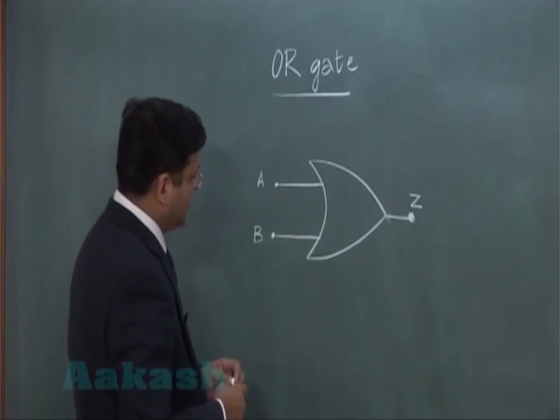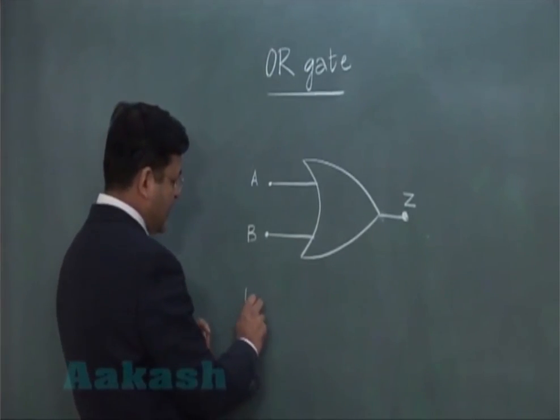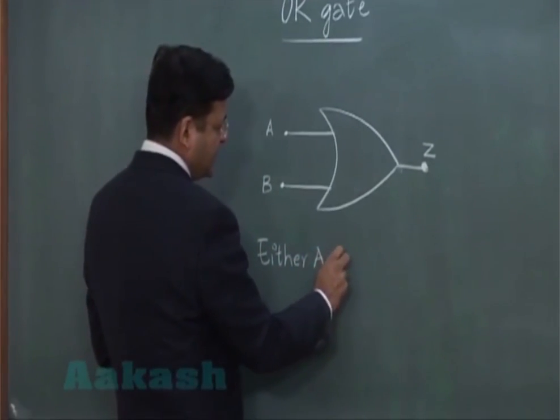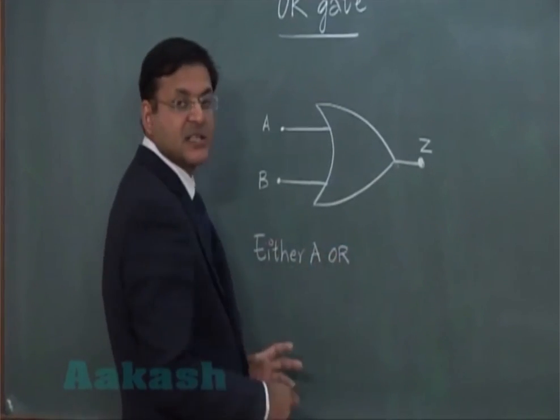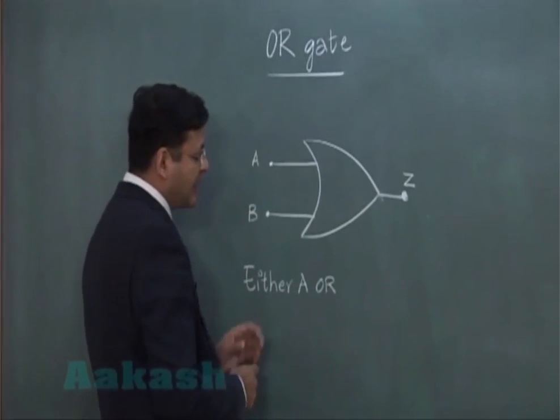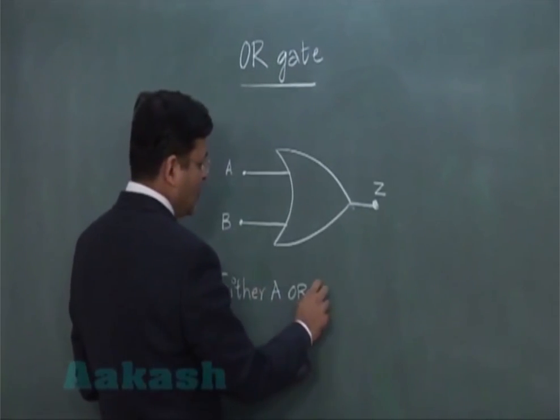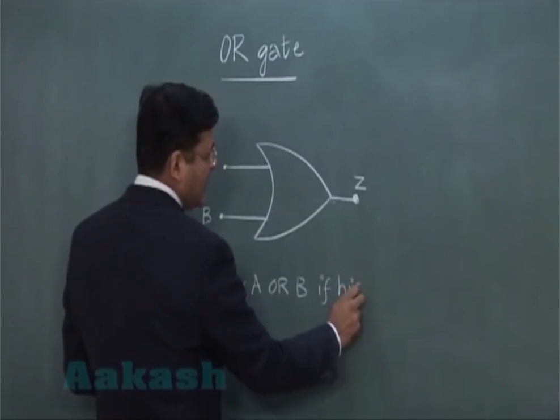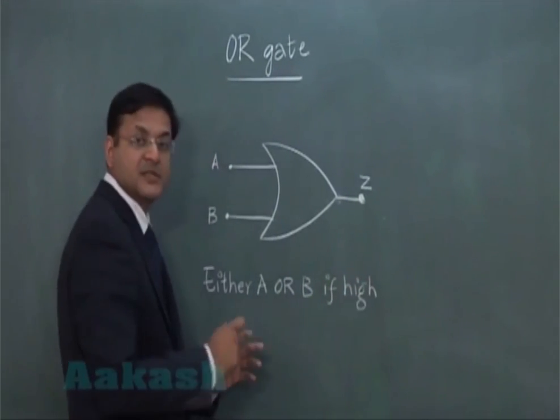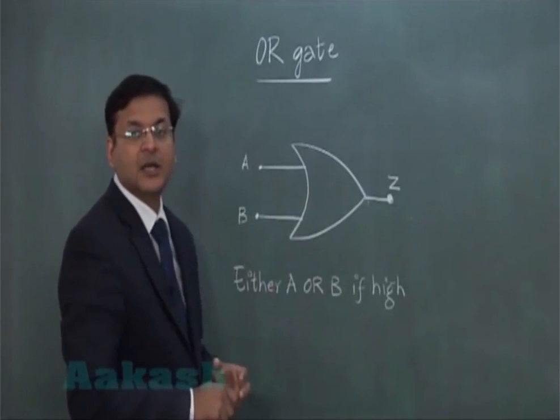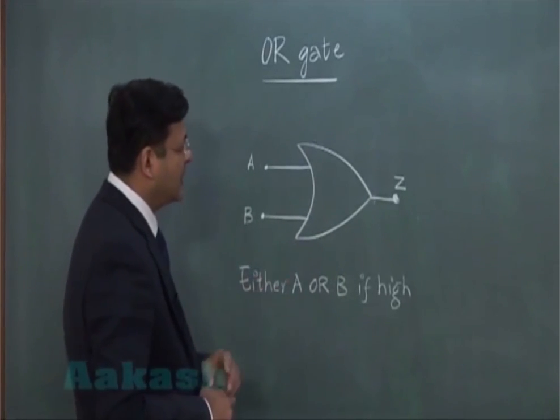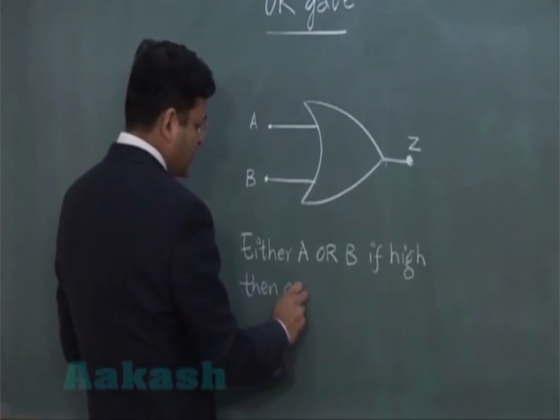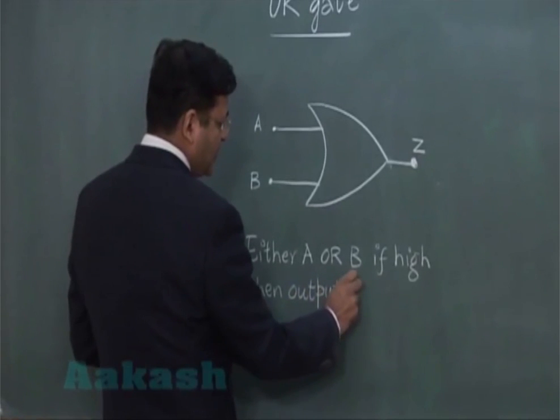If you talk about logic in language sense, then we say that either A or B, probably that is the reason this is the name OR gate given to this particular system. Either A or B, if high - high means higher than 5 volt and indicated by 1 - then output is high.